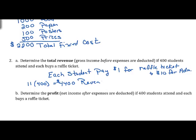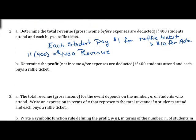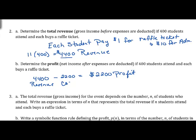This is revenue — money that you'll take in — but it does not account for any money spent to put on the event. Now we want to determine the profit, which is the net income after expenses are deducted, again if 400 students attend. We take in $4,400 and subtract our costs of $2,200. Revenue minus cost gives you profit.